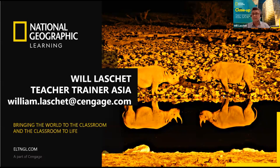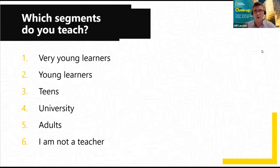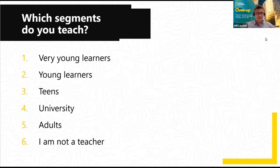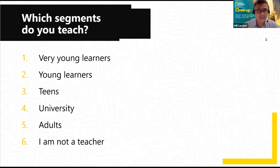I'd like to find out a little bit more about who we have here today, as I always do, so let us do our first poll. Please can you tell me — you should see the poll up on the screen — you can select as many options as you want, so if you teach everything you can select everything. It's just to give me an idea of who we have here. Results coming in — wow, we've got very quick voting today, almost 80 percent of you have voted, that's wonderful.